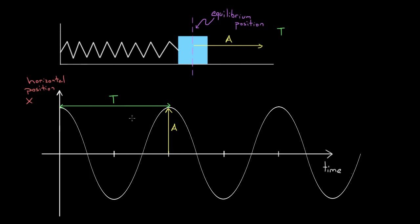However, a lot of times you also need the equation. You might want to know what equation would describe this graph. What I mean is that this graph is representing the horizontal position x—how far the mass has been displaced from equilibrium—as a function of time.